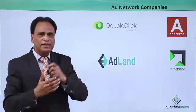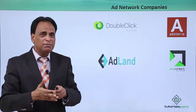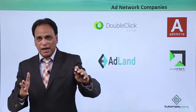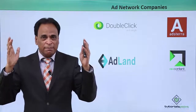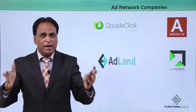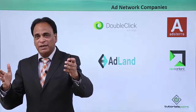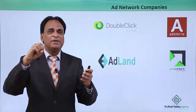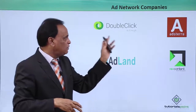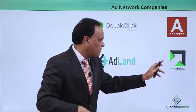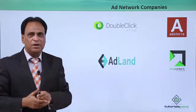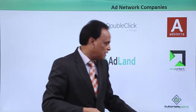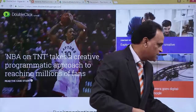There are various ad network companies available that provide this facility for both advertisers and publishers to manage their inventory and resources. The advertiser pays money, and the publisher puts up the ad and receives money from the ad networks. Some of the ad networks include DoubleClick, Astera, RevContent, and Adland. Let us check out these websites and see how they look and what features and facilities they offer.